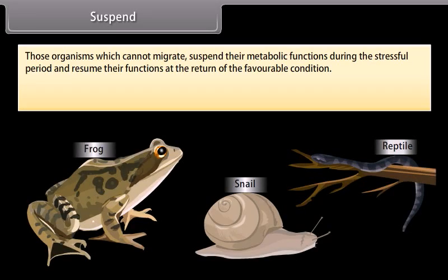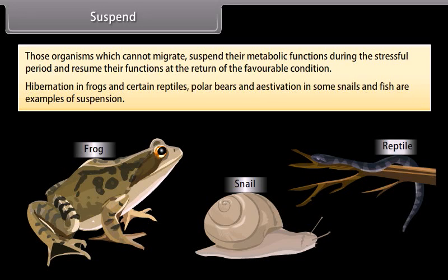Those organisms which cannot migrate suspend their metabolic functions during the stressful period and resume their functions when favorable conditions return. Hibernation in frogs and certain reptiles, polar bears, and estivation in some snails and fish are examples of suspension.